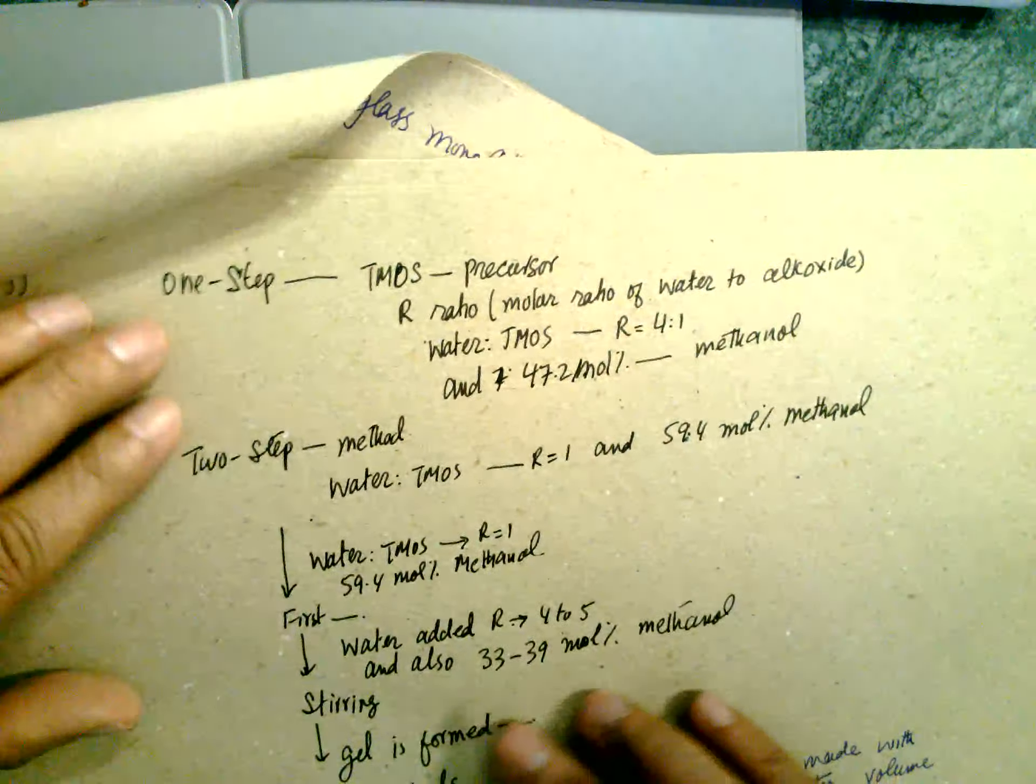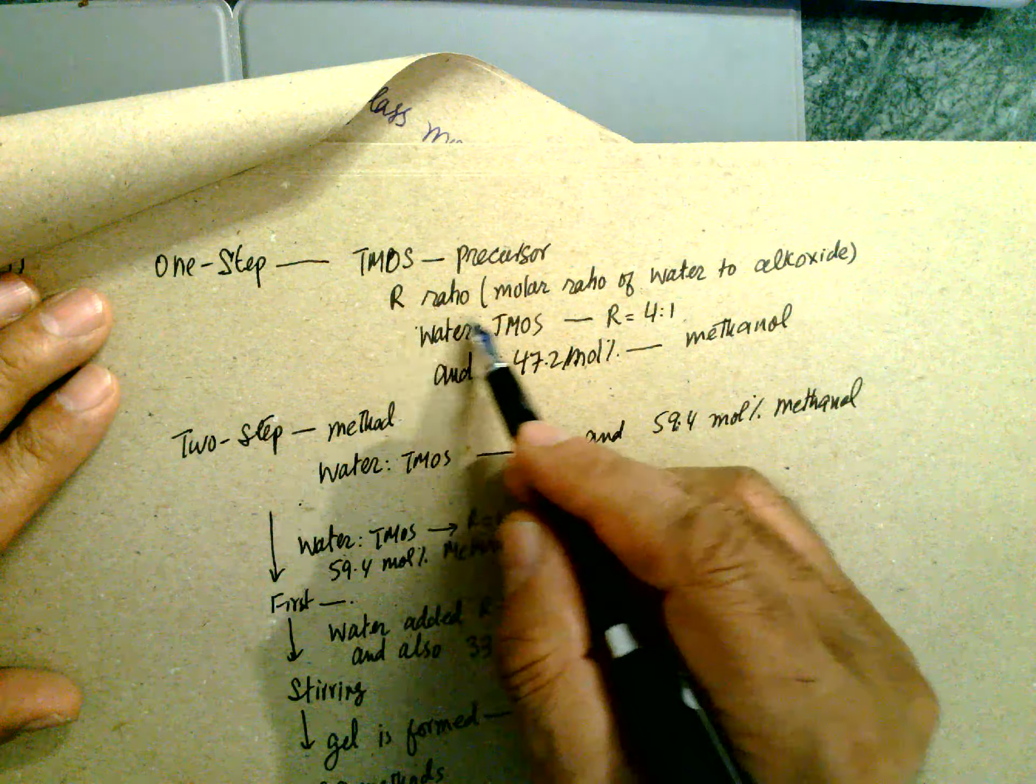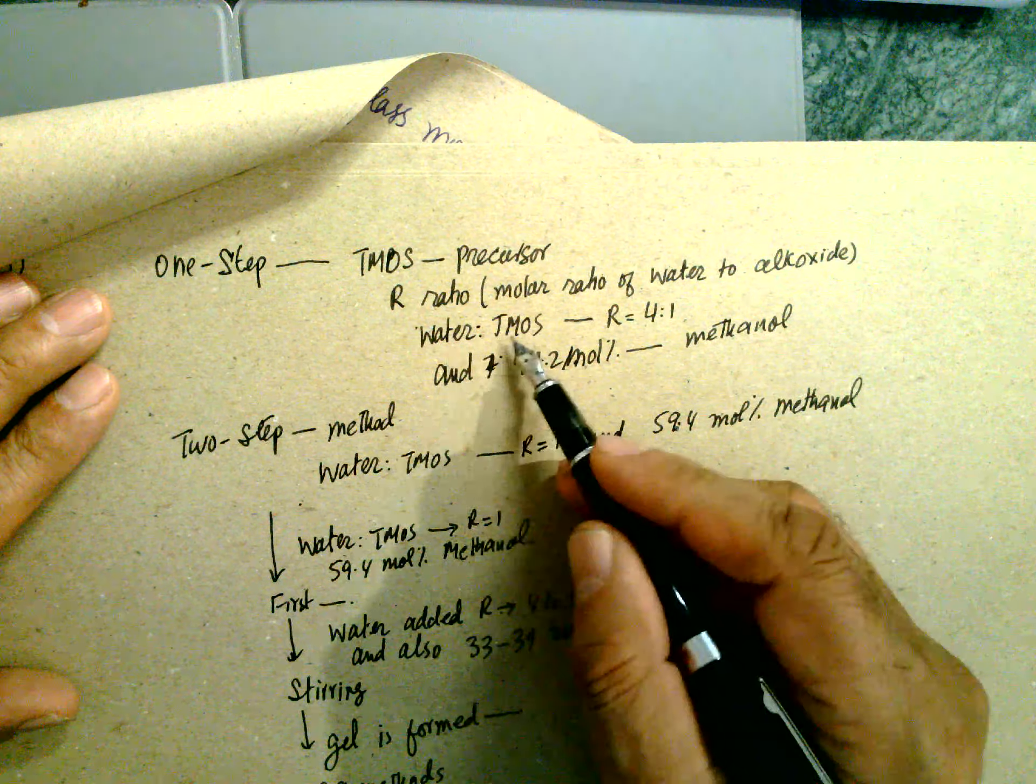These are the three monomers, precursors. One-step method, TMOS precursors is used.